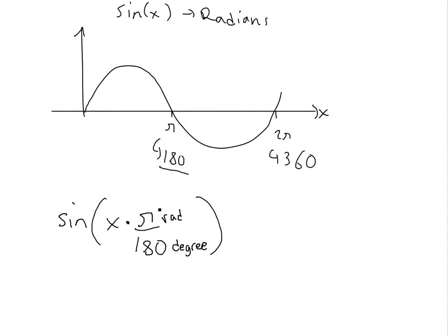So if x equals 180, then we're going to have sine 180 times pi divided by 180. The 180s cancel, and we're left with sine of pi.